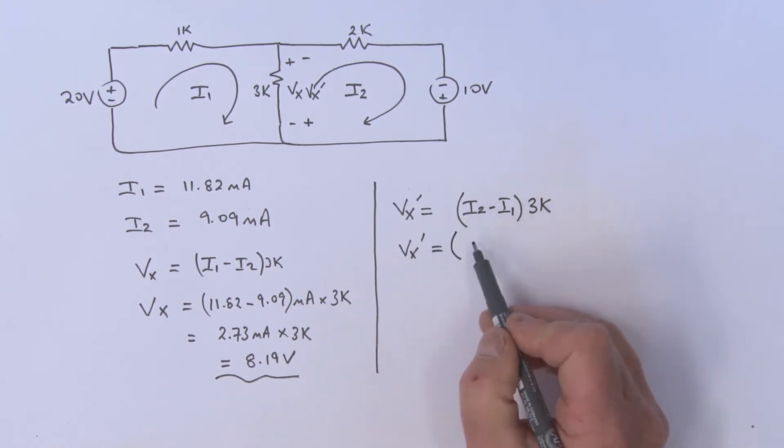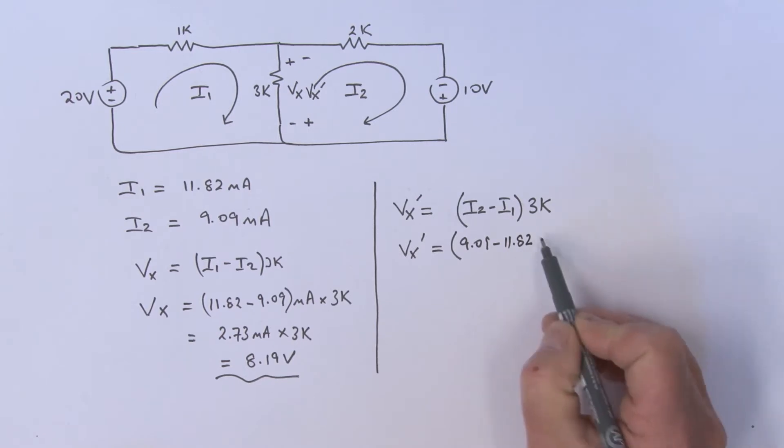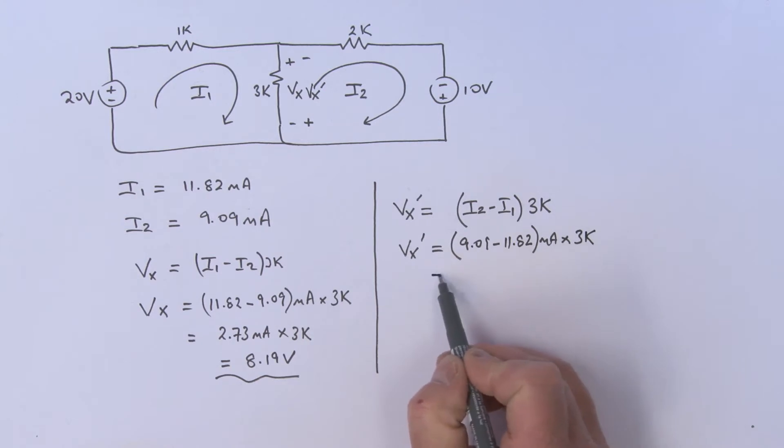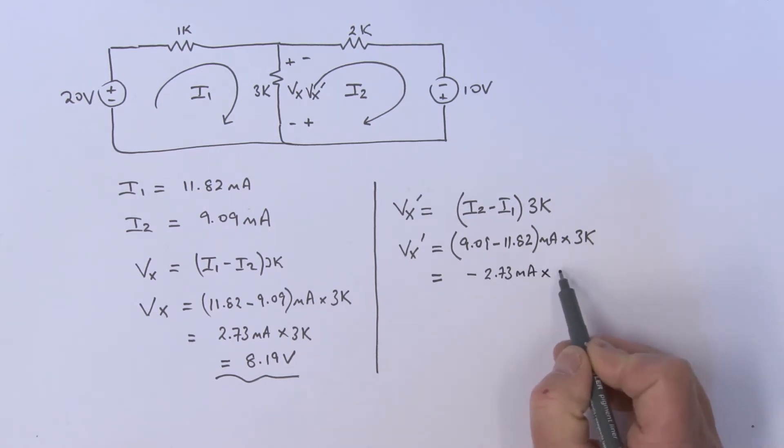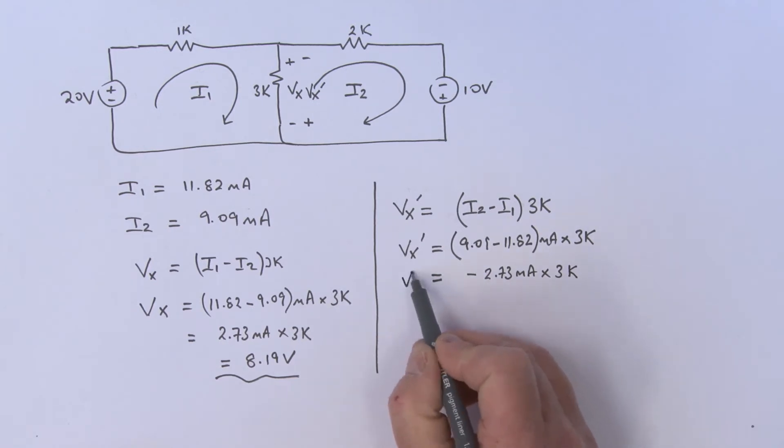I'll say Vx dash equals, opening this up, 9.09 minus 11.82 milliamps, multiplied by 3k. So that equals—that's going to be a minus, isn't it? This number's smaller than this number—so that's minus 2.73 milliamps times 3k. Therefore, my Vx dash equals minus 8.19 volts. How do I reconcile these two things to be the same?